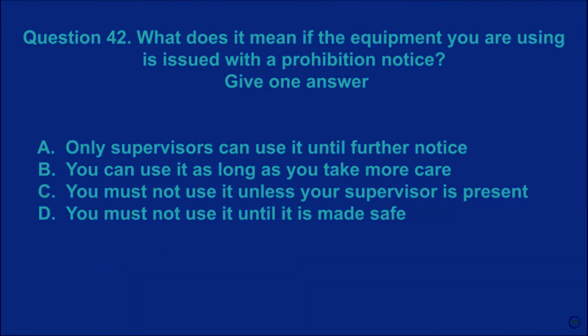Question 42: What does it mean if the equipment you are using is issued with a prohibition notice? Give one answer. A: only supervisors can use it until further notice. B: you can use it as long as you take more care. C: you must not use it unless your supervisor is present. D: you must not use it until it is made safe. The correct answer is D.